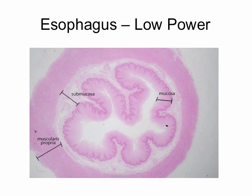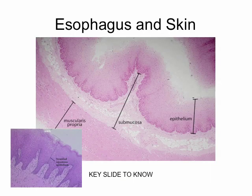The serosa is not readily identifiable in this slide. Now let's go up to a slightly higher power in the next slide. Here you see a higher power view of the esophagus, and inset in the lower left hand corner is a slide of skin. Notice the similarity — both are stratified squamous epithelium. In both areas, the skin and the esophagus, the epithelium is scraped off by the normal functioning of the organ, and this kind of epithelium readily replaces the upper layer of cells.